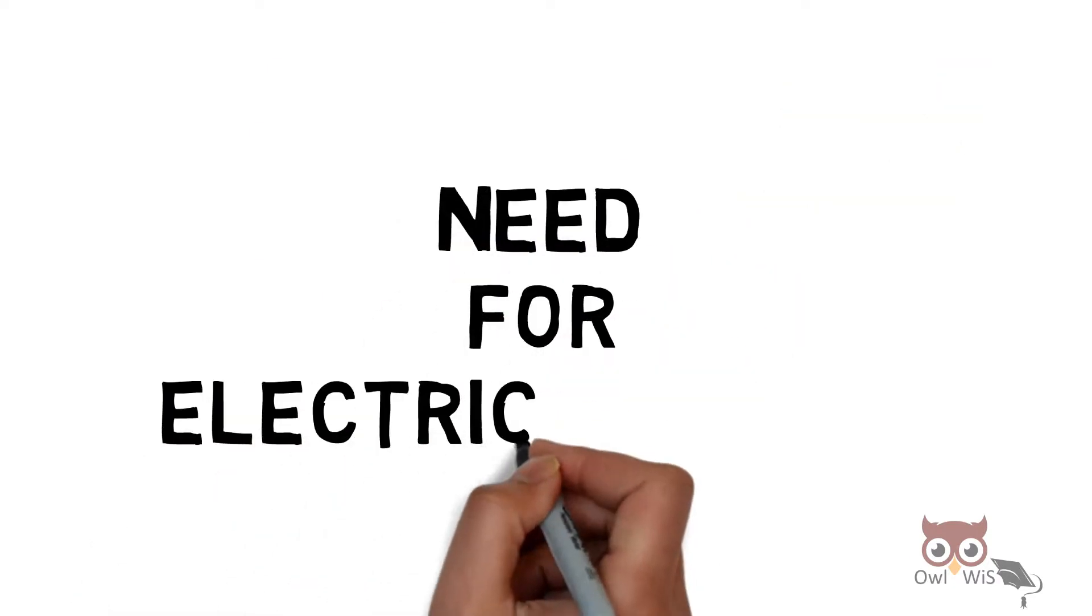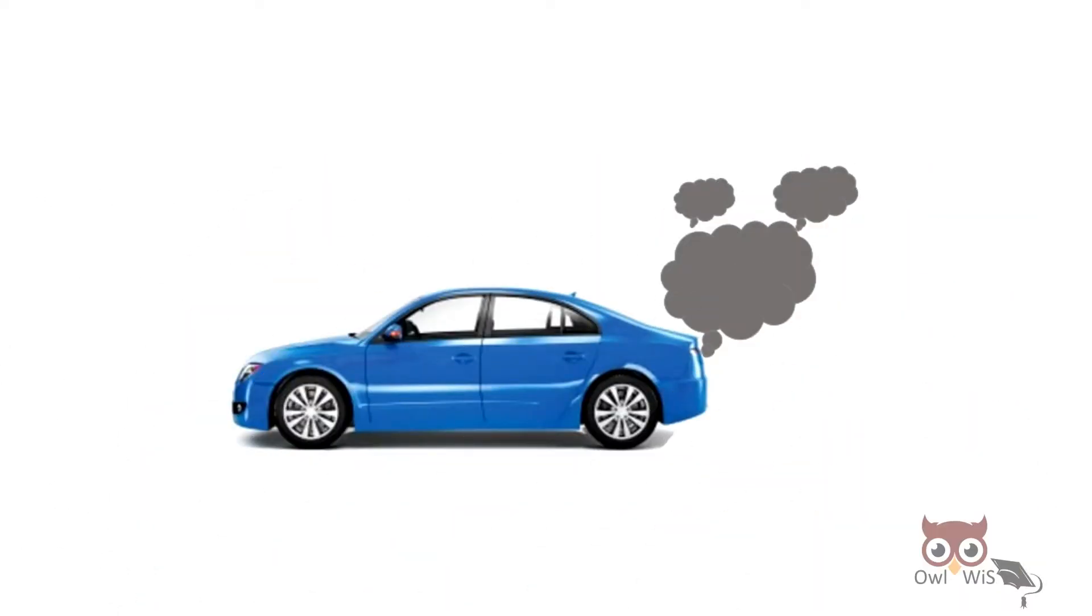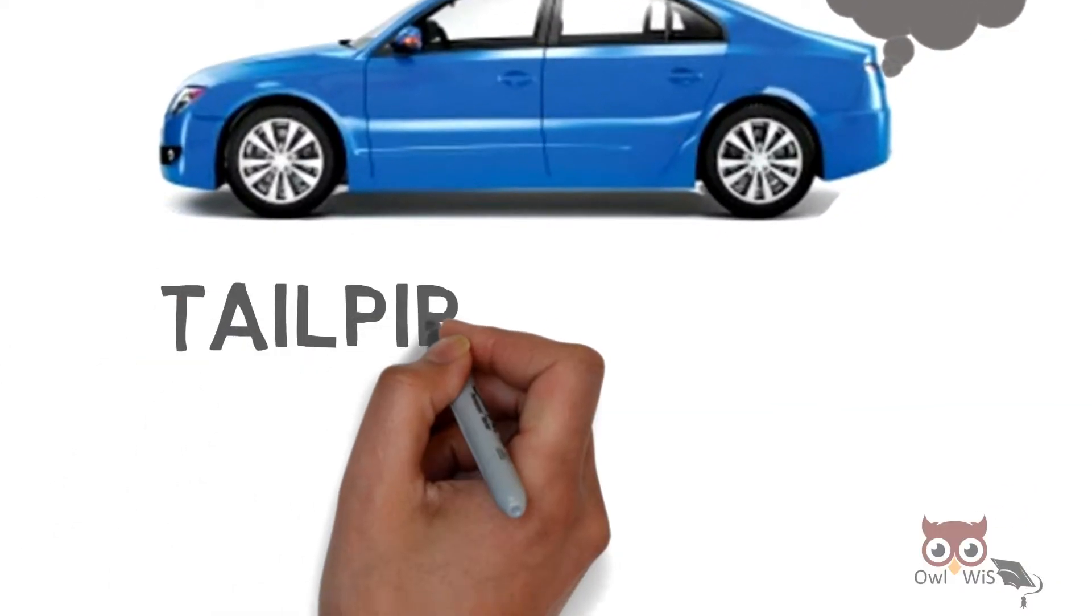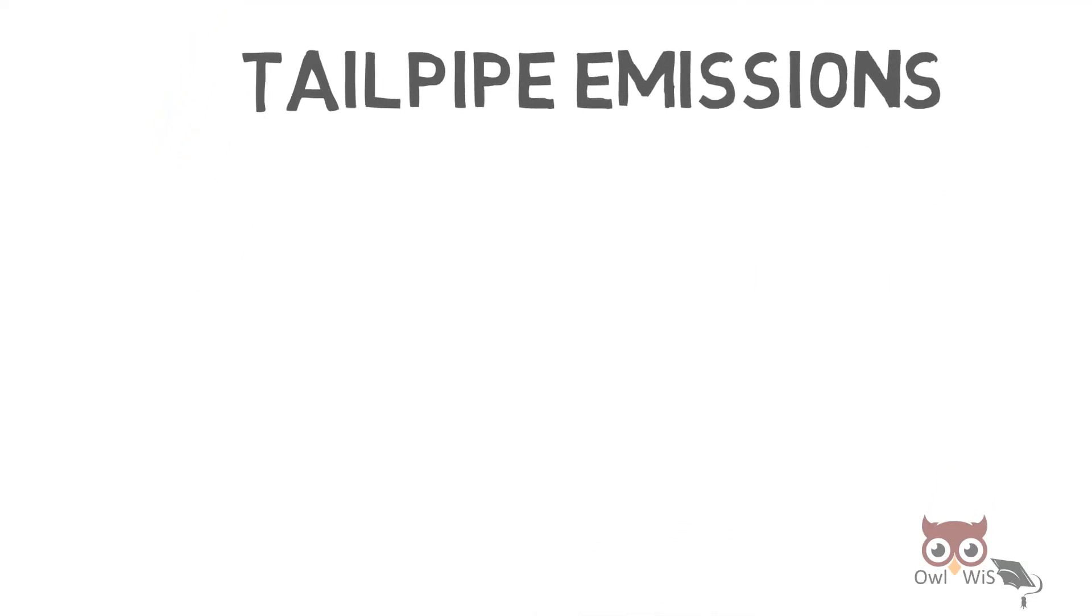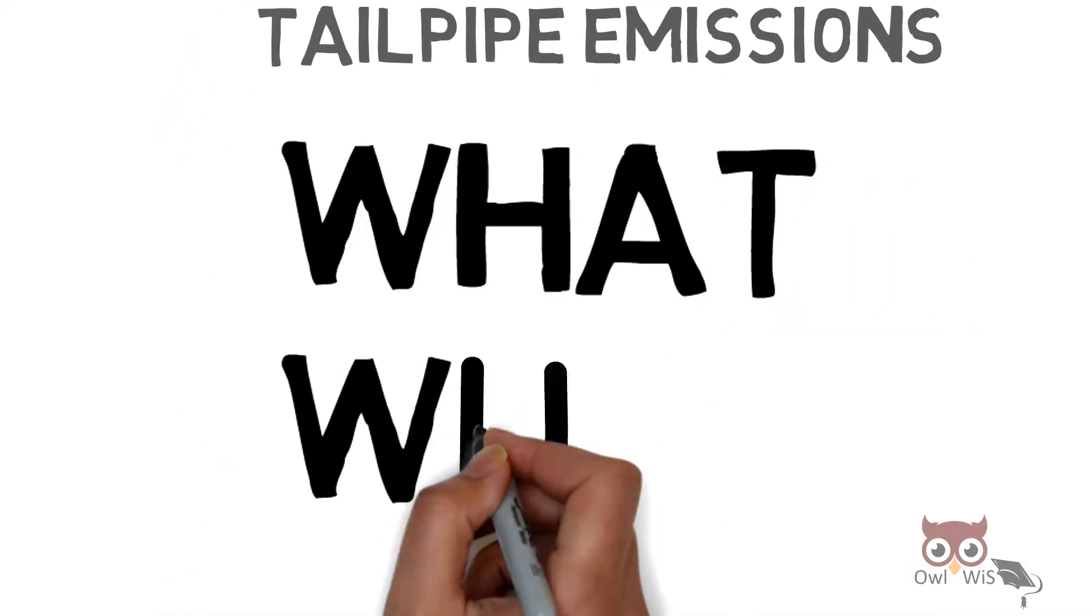Need for Electric Vehicles. The major disadvantage of conventional vehicles is the tailpipe emissions. What are the emissions and why do they occur?